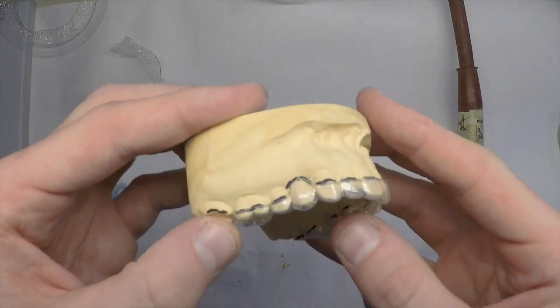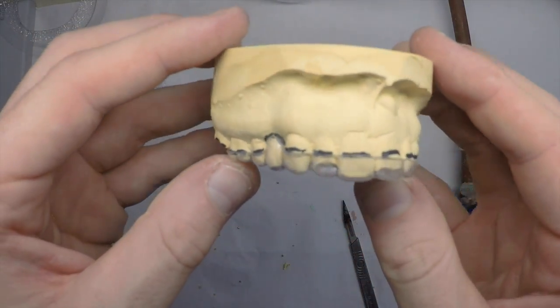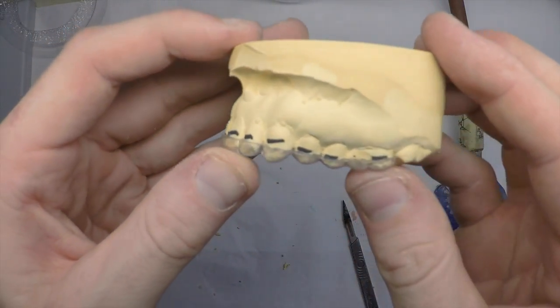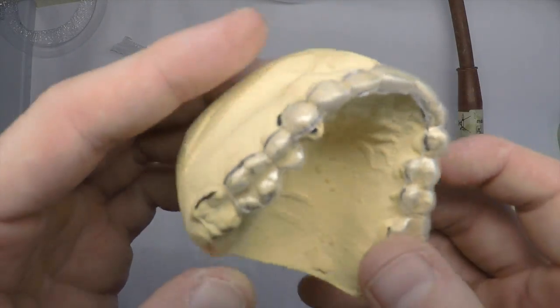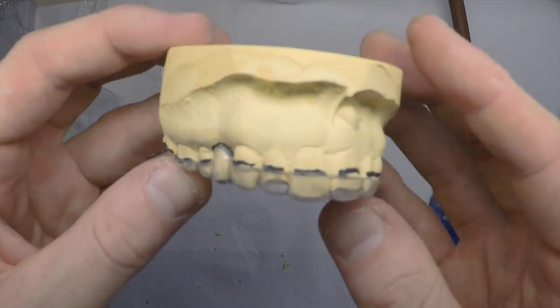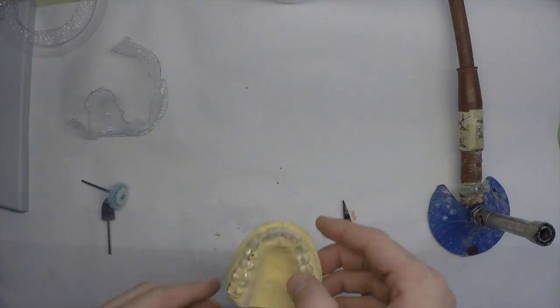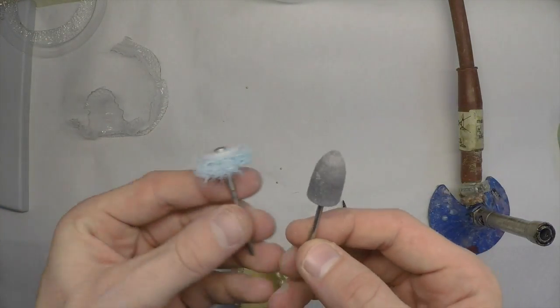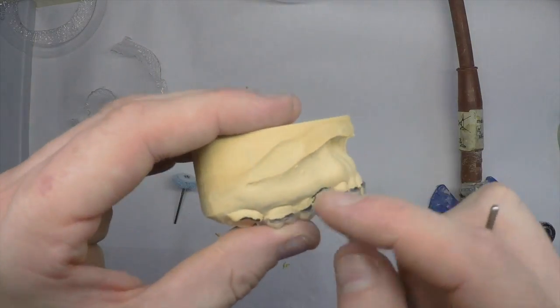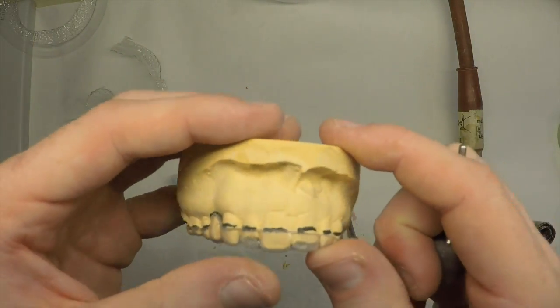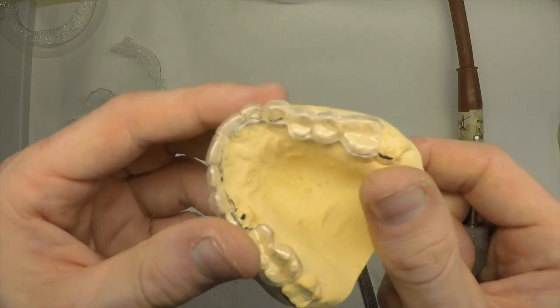Once you've finished trimming, it should look something along the lines of this, which just needs polished. To polish I just use a couple of lab polishing burrs. Although a Christmas tree or a bullet acrylic burr will also work.